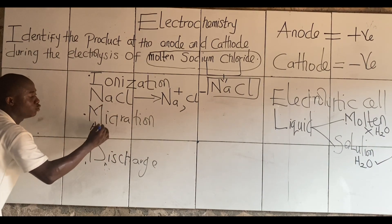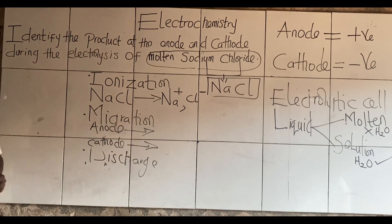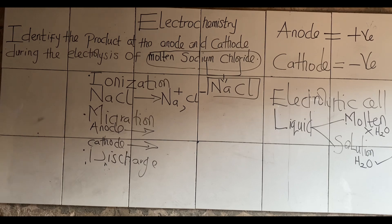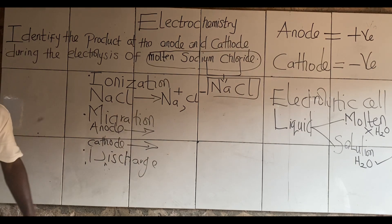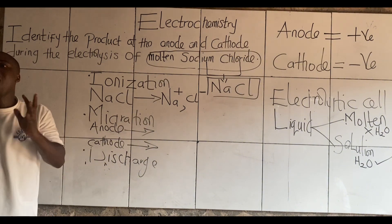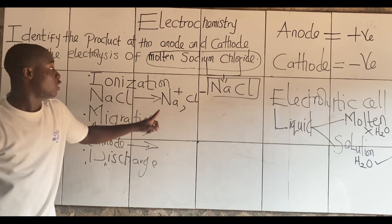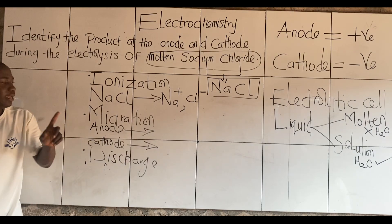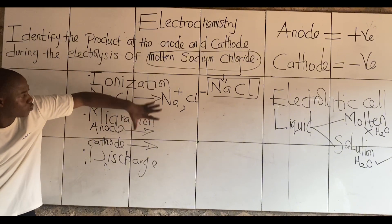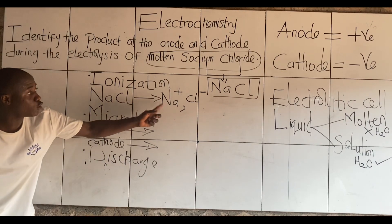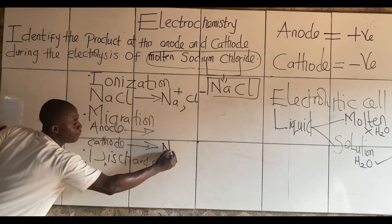We're migrating them to these terminals — the first terminal is anode, and what's the other terminal? Cathode. So which one — sodium or chloride — should I migrate to which? Anode is positive. What about cathode? Negative. So should plus plus come together? No. So where should sodium be migrated to? Cathode. Because cathode is negative and sodium is positive, they will come together. So sodium is migrated to cathode.